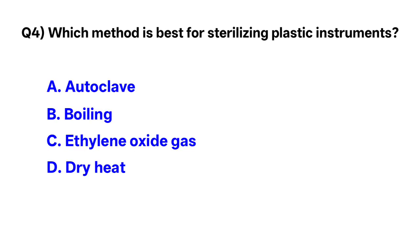Question No. 4. Which method is best for sterilizing plastic instruments? Correct option is C. Ethylene oxide gas.